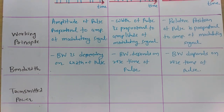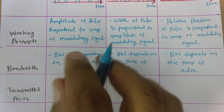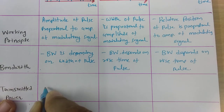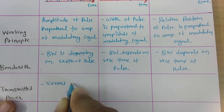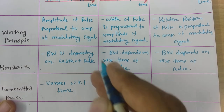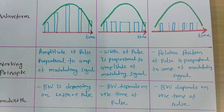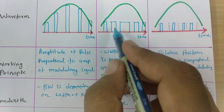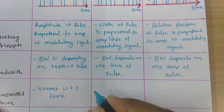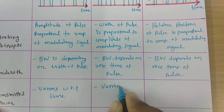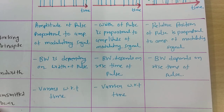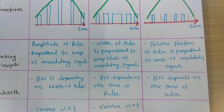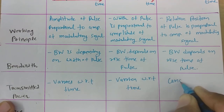The third performance parameter is transmitted power. In Pulse Amplitude Modulation, transmitted power varies with respect to time, as one can see here. In PWM as well, transmitted power will change with respect to time — that power changes in terms of width. However, when we talk about Pulse Position Modulation, transmitted power will not change with respect to time — it will be constant.